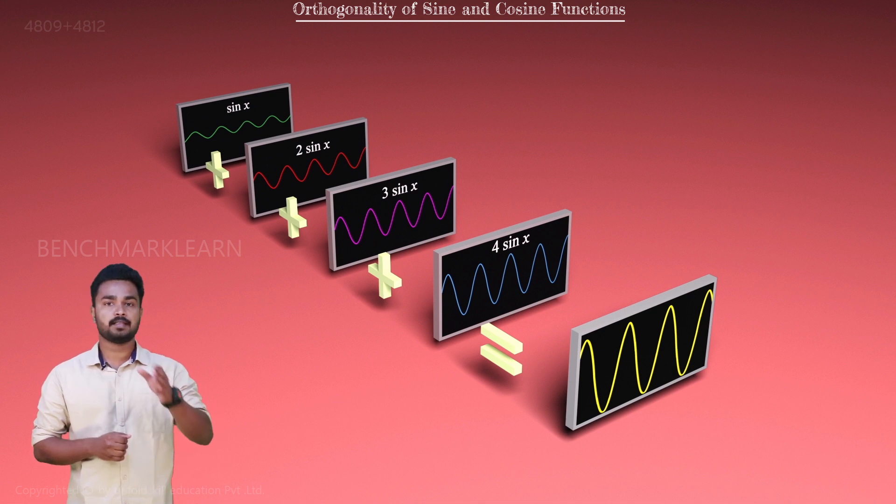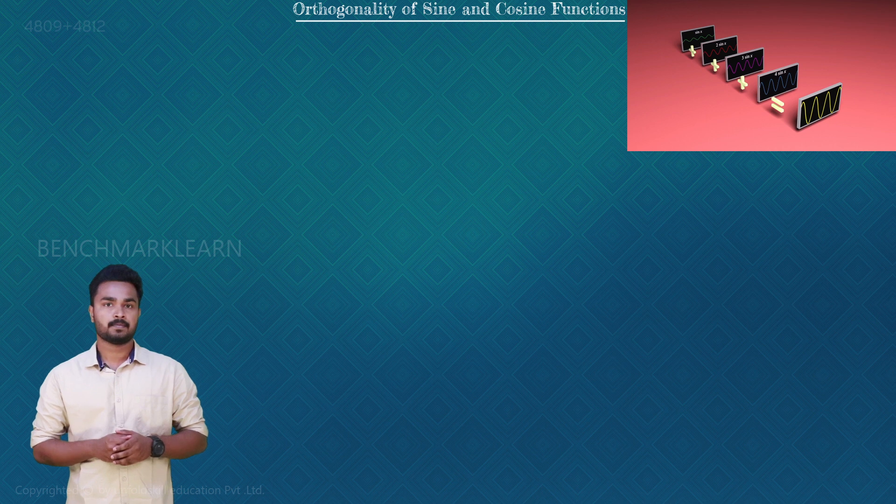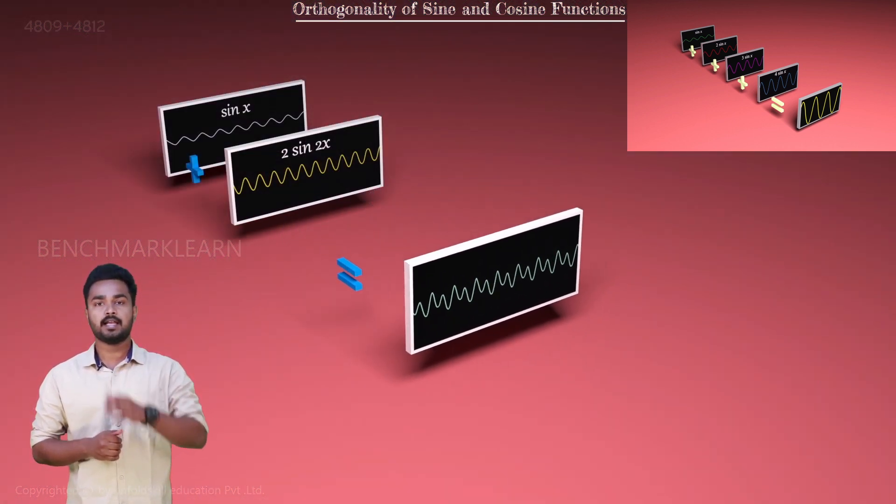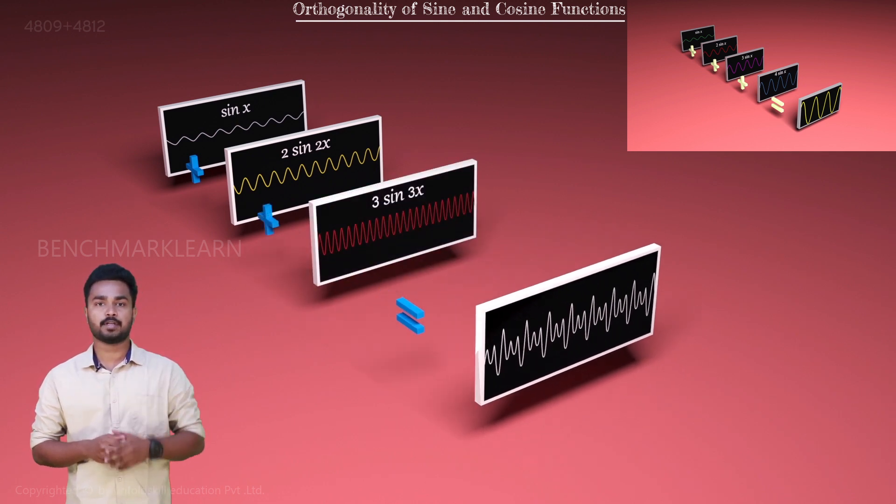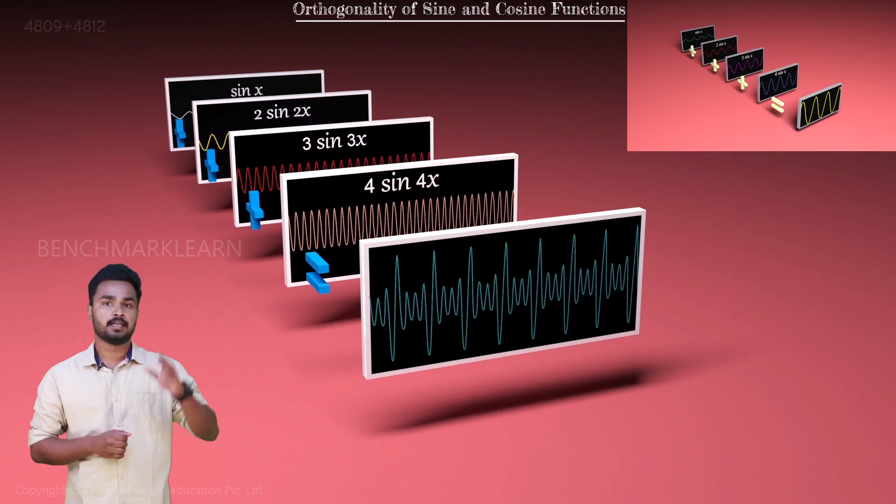So, adding up the same frequency function won't work there. Now, try adding sin x, 2 sine 2x, 3 sine 3x, 4 sine 4x. We get a completely different waveform. This new function is a periodic function.